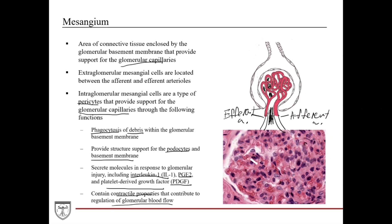On tissue sections, mesangial cells can sometimes be seen — here they're clustered with a pinkish-like cytoplasm to them, visible between where the red blood cells indicate capillaries. You can see another collection of them here and here.